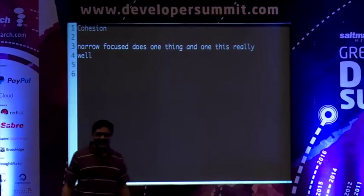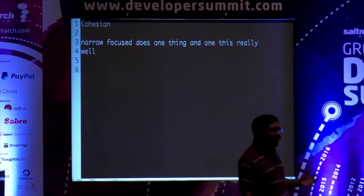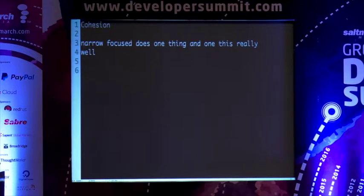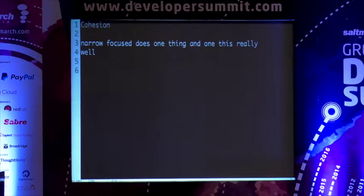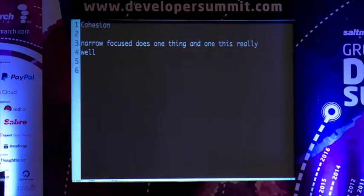Why should you make code cohesive? It really comes down to economics. Imagine your code is doing seven things and you need to make a change — there are seven reasons for this code to change. But a piece of code that does exactly one thing only changes when that one responsibility changes. The frequency of change for code doing one thing is much lower than code doing seven things. A code that does several things has to change more frequently.